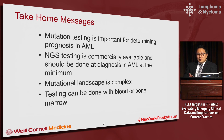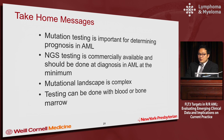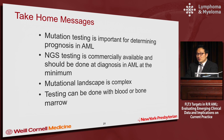The take-home messages: Mutation testing is very important for determining prognosis in AML among other things. Mutation testing via NGS is commercially available and ideally should be done at diagnosis because it provides prognostic information. There is argument for repeated testing — Dr. Robles will cover MRD testing — and also at relapse, if you have a targeted agent like IDH1 or IDH2, there's rationale to retest to see if you have acquired a targetable mutation. The mutation landscape is complex; patients usually have more than one mutation. And importantly, testing can be done with blood or bone marrow.